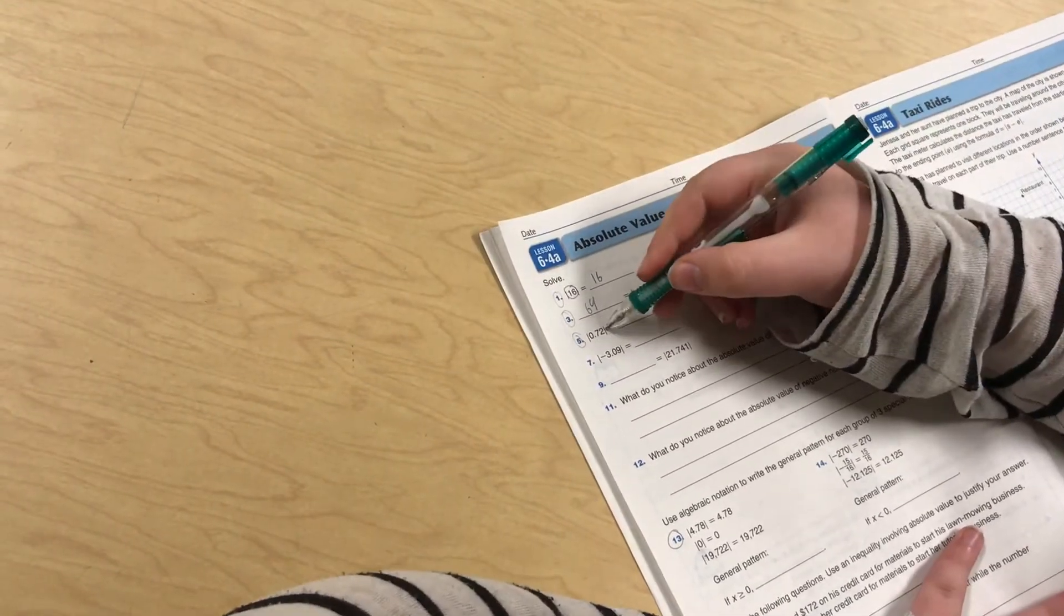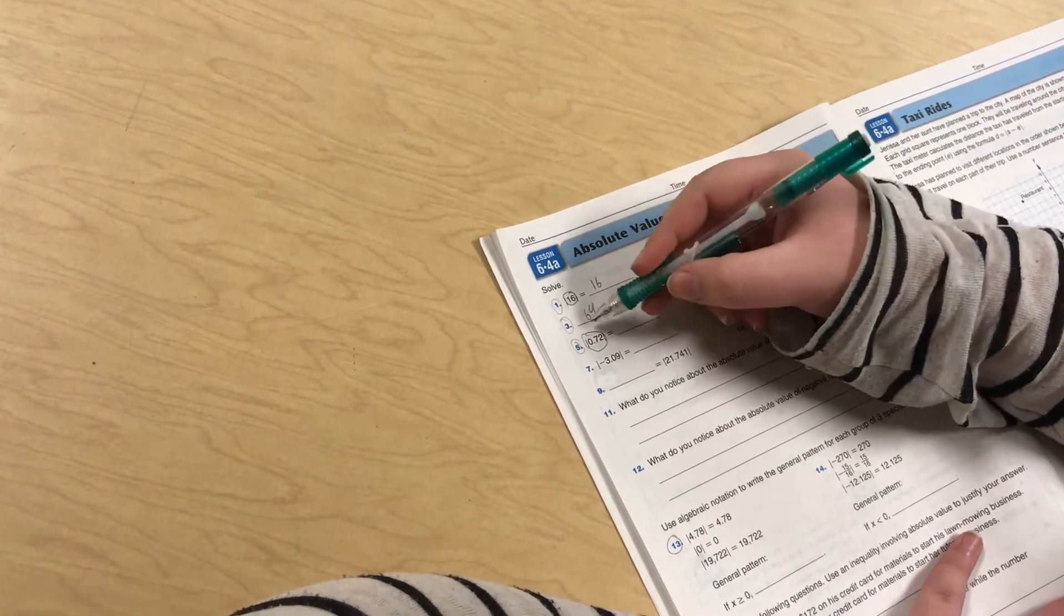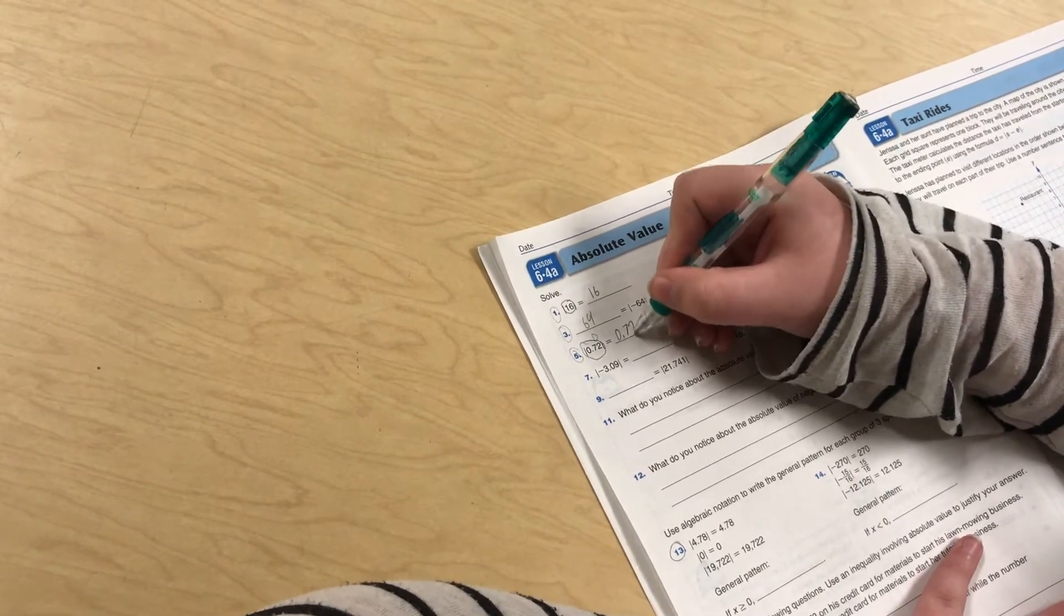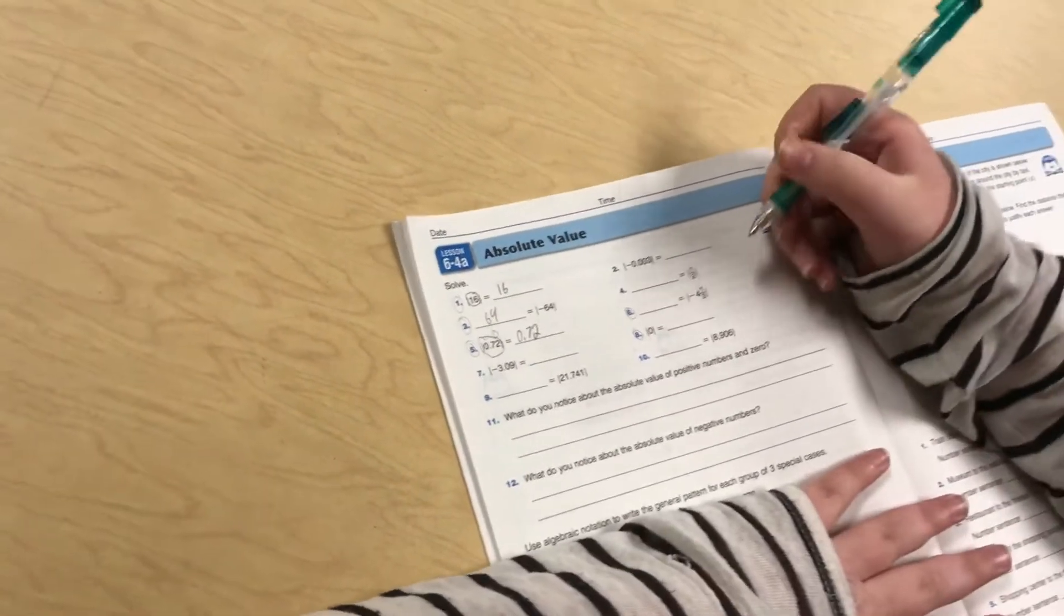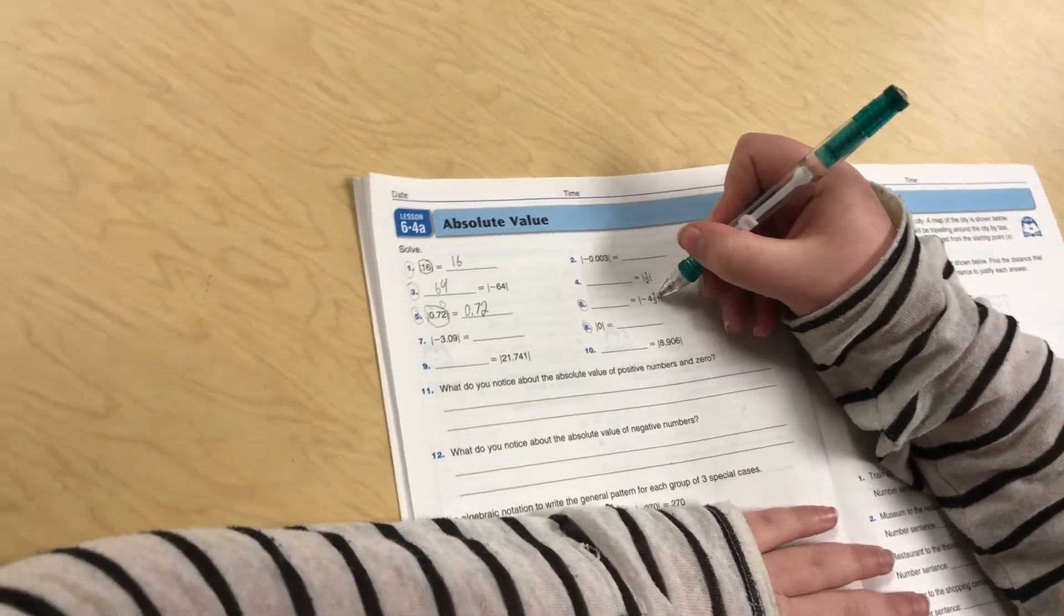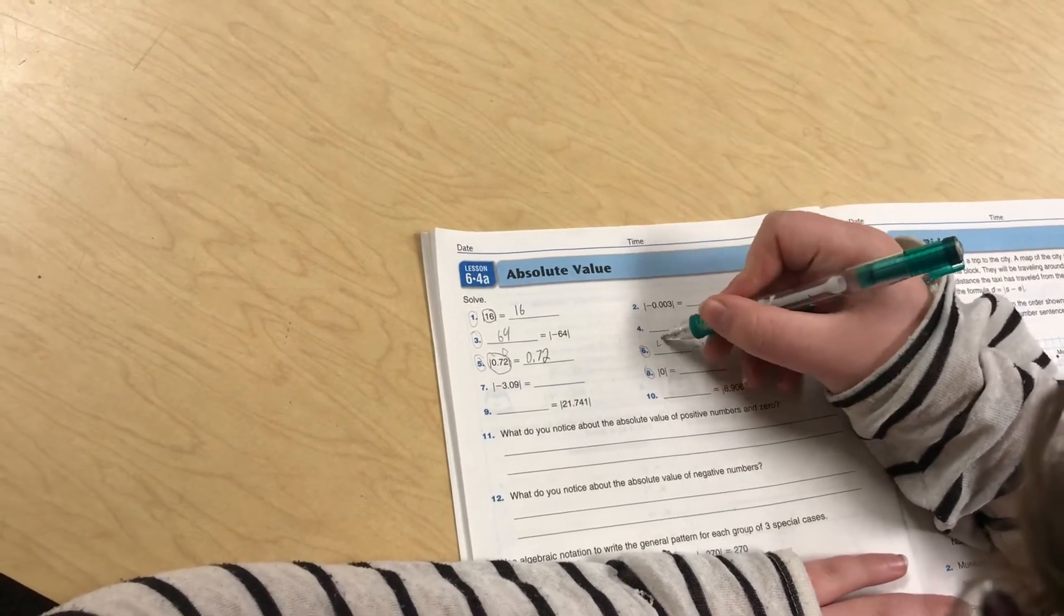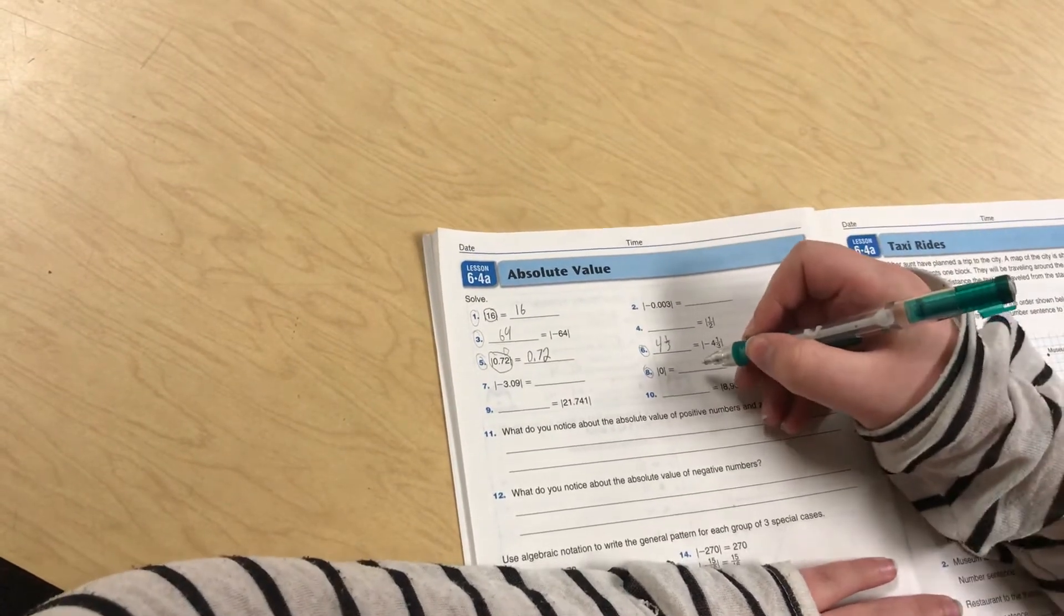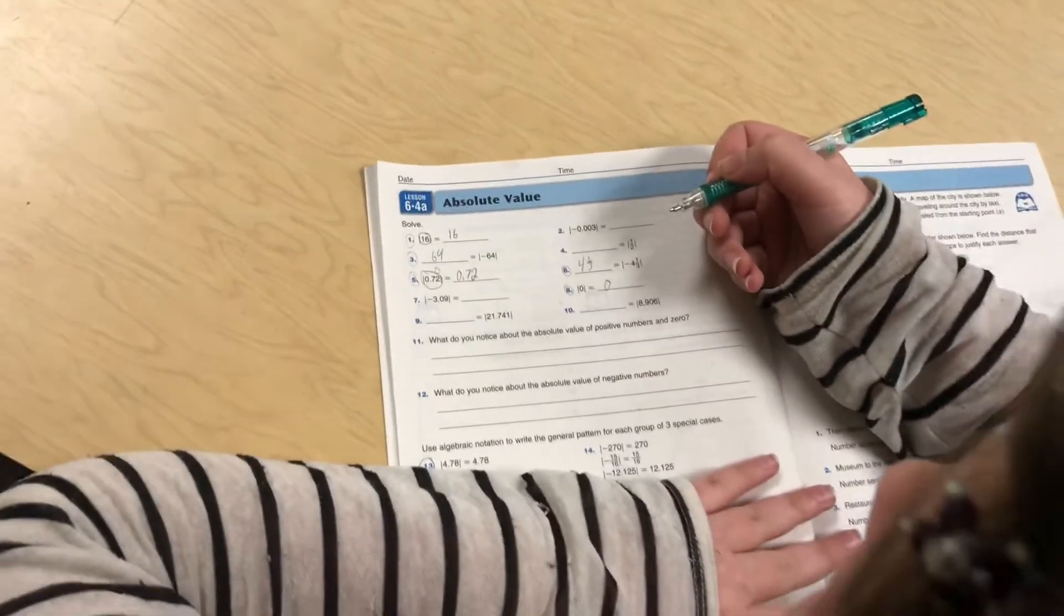So with decimals, how far is 72 hundredths away from 0? That would be 72 hundredths. Then this has fractions in it, and this is a negative fraction. So how far away is 4 and 1 third away from 0? That would be 4 and 1 third. With 0, the absolute value of 0 is 0, because how far away is 0 from 0 would be 0.